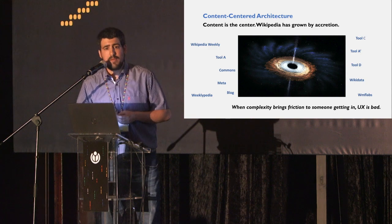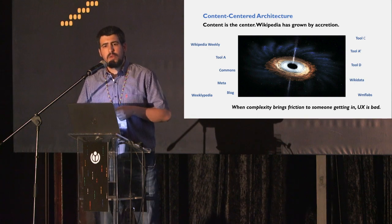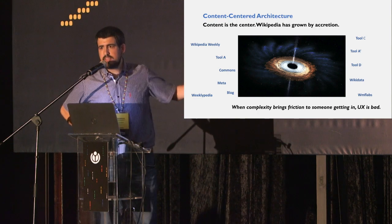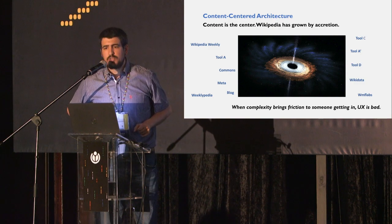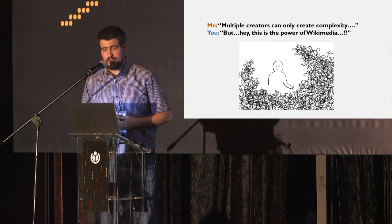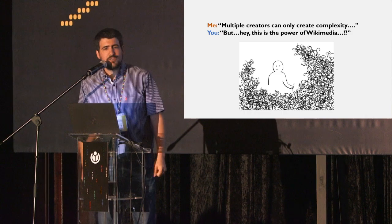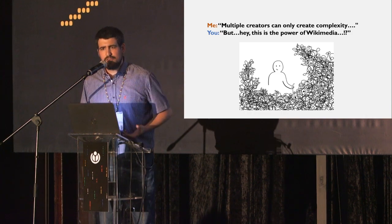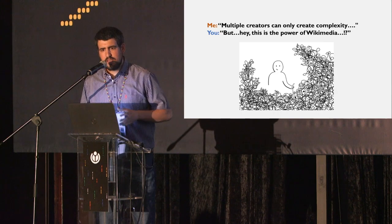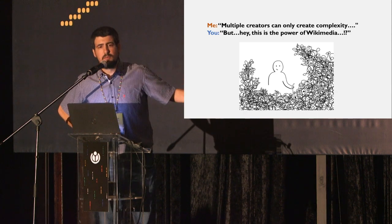It's really difficult to catch up with everything going on. Very often we realize there are tools that would have helped us if we knew they existed when we started a particular task. Complexity brings friction — this complexity is against the user experience. With multiple creators, it can only grow in complexity. We shouldn't stop that — this complexity will continue and grow — but we need different ways to tackle it and to balance a content-centered architecture like Wikipedia and transform it into a more user-centered architecture.